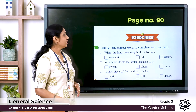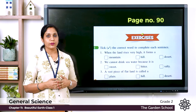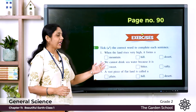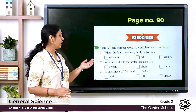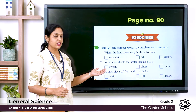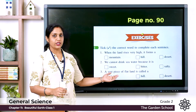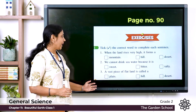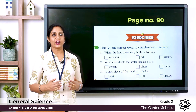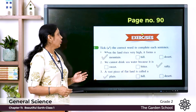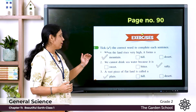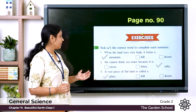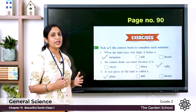Let's move on to the next exercise on page 90. Question one: when the land rises very high, it forms a — mountain, hill, or down? The answer is mountain. Question two: we cannot drink sea water because it is — sweet, bitter, or salty? The answer is salty. Question three: a vast piece of flat land is called a — plain, hill, or desert? The answer is plain.